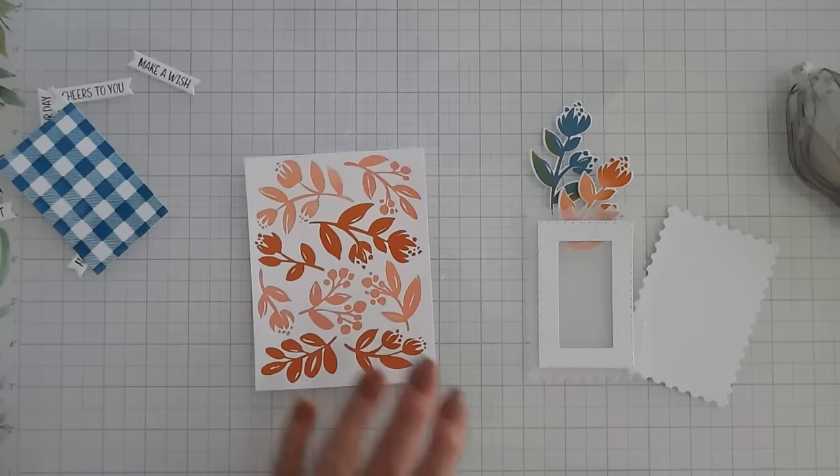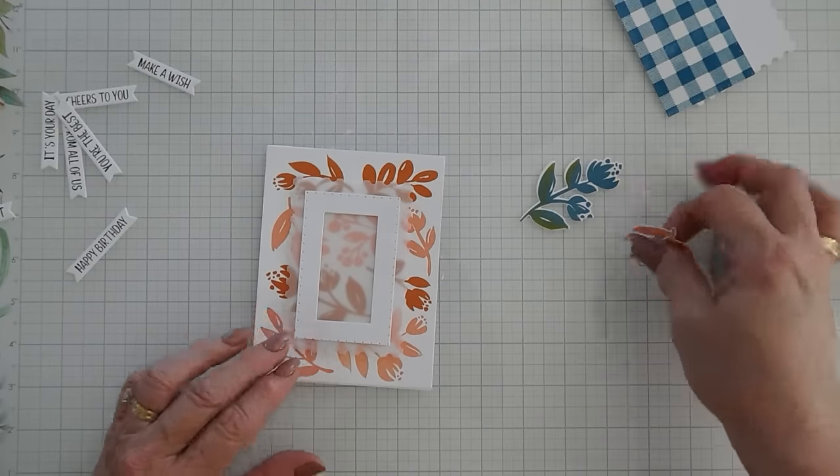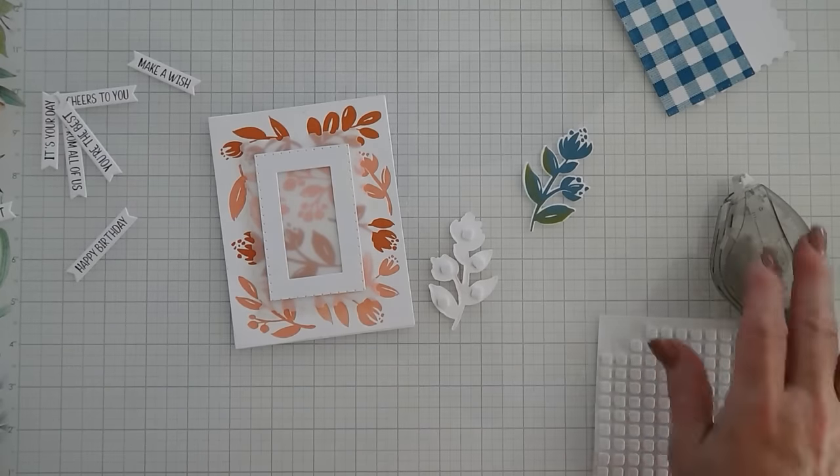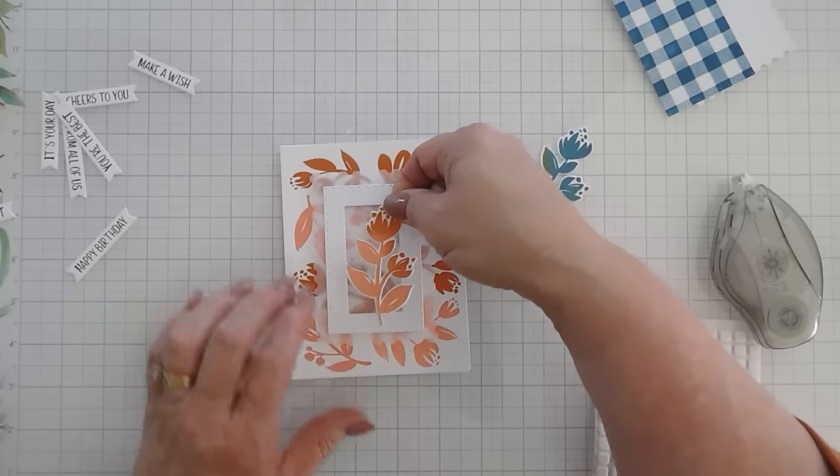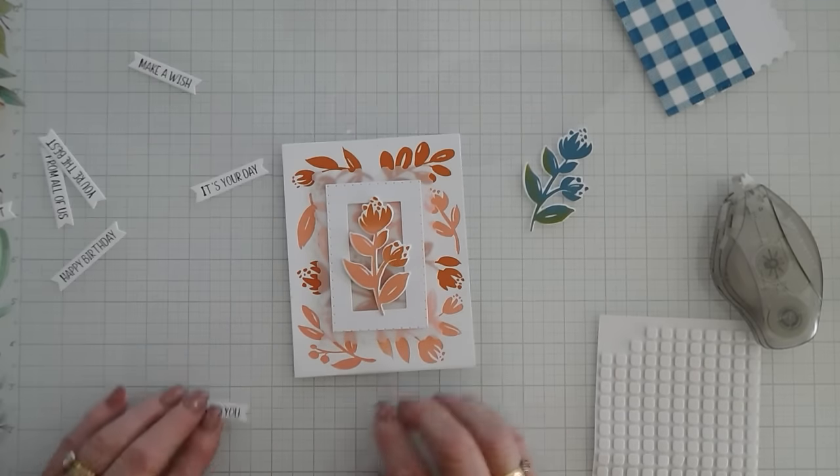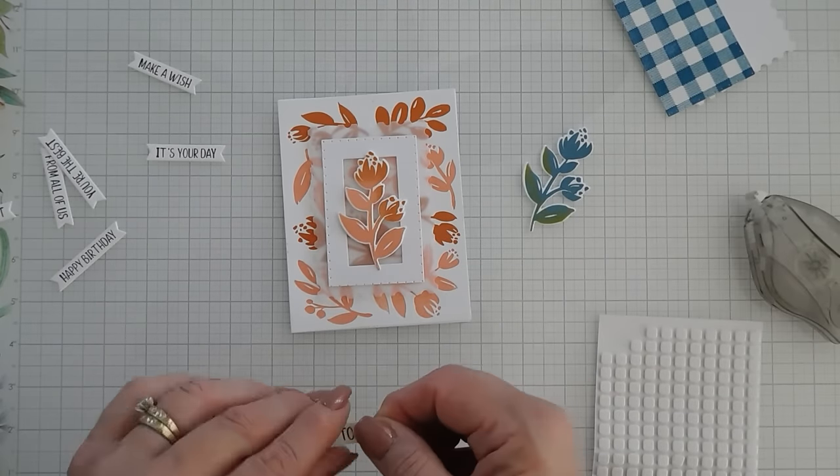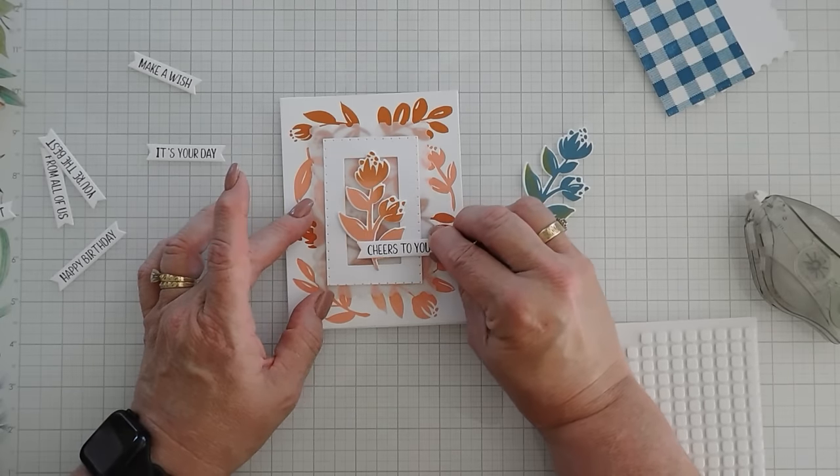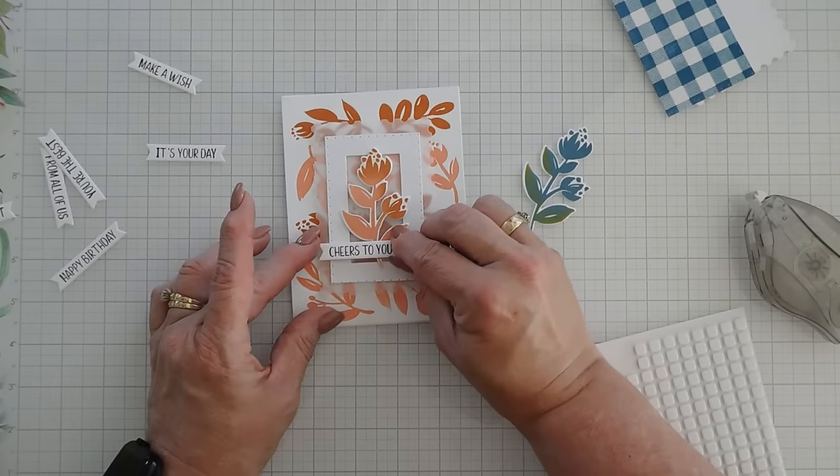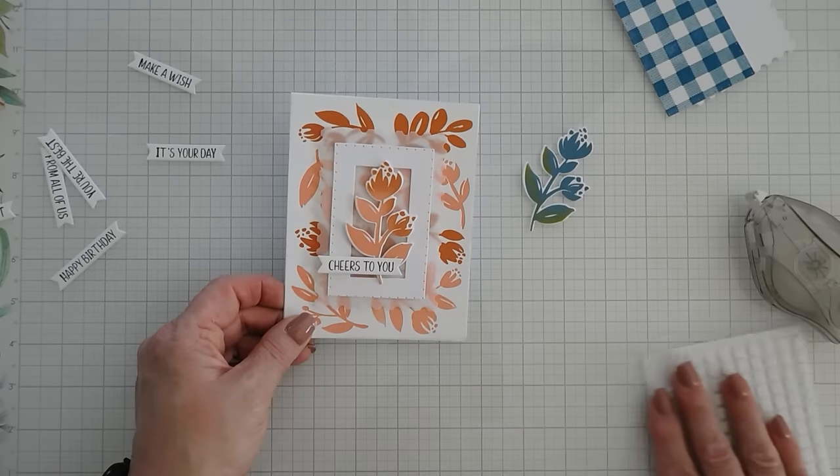Then I'm going to flip this around, and I'm going to pop this up with some foam tape. And we'll center it right here. And then we'll put this on our card base. So you can still see the print behind there. And then for this card, we're going to go tone on tone. I'm going to go ahead and add some foam squares behind our floral. And then we will add this in the center. I think that looks pretty.